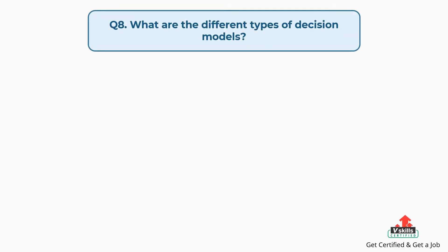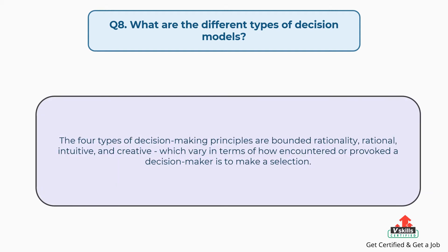Question number eight: what are the different types of decision models? The answer is, the four types of decision-making principles are bounded rationality, rational, intuitive, and creative, which vary in terms of how experienced or motivated a decision maker is to make a selection.